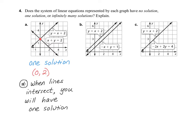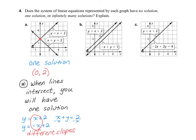If we look at the equations, y = x + 2, and the other equation is x + y = 2. If I solve for y on the second equation by subtracting x, I see that the second equation is actually y = -x + 2. Any time you have different slopes, the lines will always intersect. In this case, the slopes are positive 1 and negative 1.